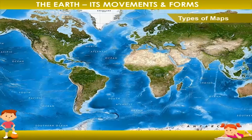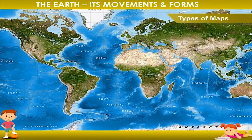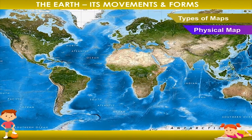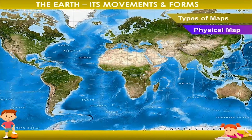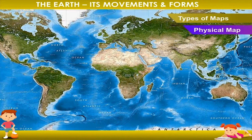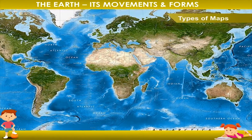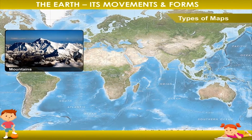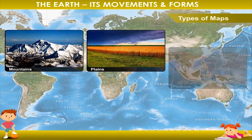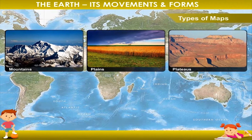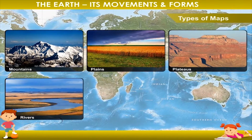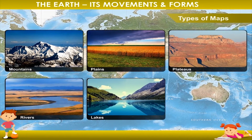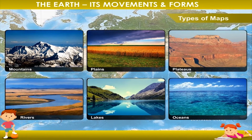Types of Maps. 1. Physical Map: It shows the physical features, which are mountains, plains, plateaus, rivers, lakes, and oceans.